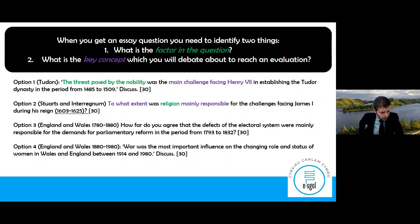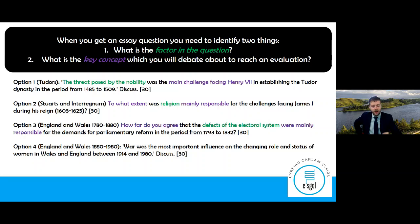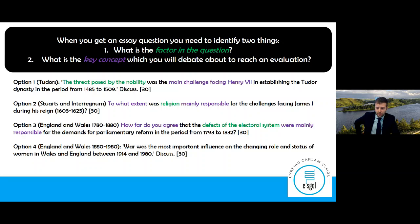Third question — England and Wales 1780 to 1880: 'How far do you agree that the defects of the electoral system were mainly responsible for demands for parliamentary reform in the period 1793 to 1832?' The factor is defects of the electoral system. The key concept: how far do you agree they were mainly responsible for those parliamentary reforms? Again, underline that time period, 1793 to 1832.